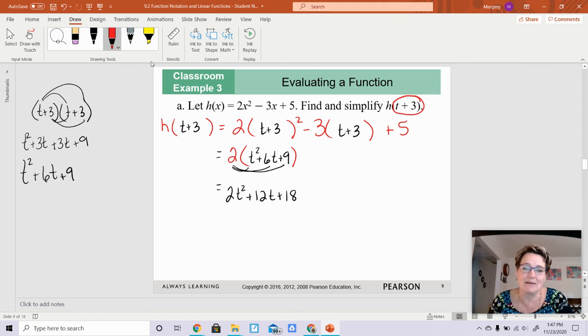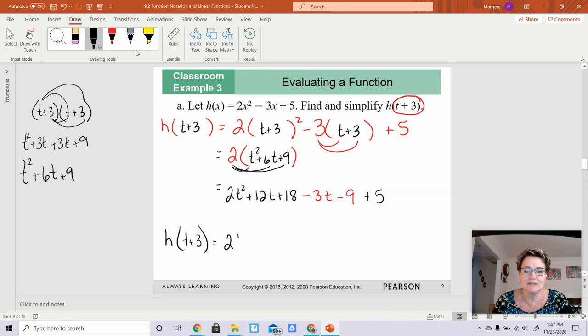So I've taken care of that first big giant problem. Now on the other side over here, it's not that bad. All I have to do is distribute the negative 3 across to each of the terms. That's going to give me negative 3t. And that's going to give me negative 9. And then you guys, I have this lonely 5 over here. Now what you need to do is combine like terms. So h(t plus 3), I end up with 2t squared. I have 12t plus negative 3t. That gives you 9t.